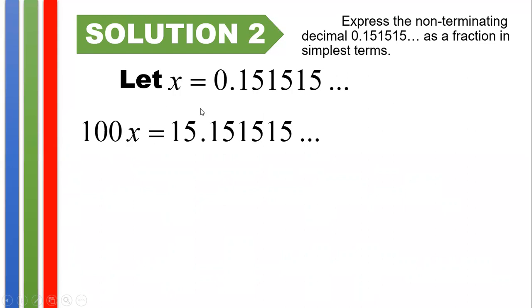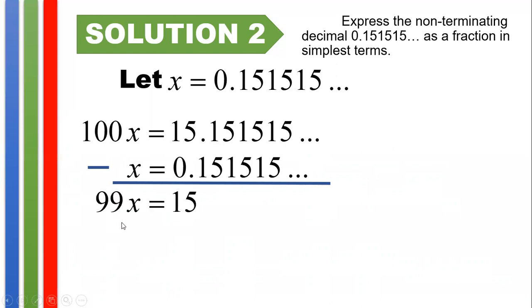0.151515... times 100 will give us 15.151515... And copying this original expression here. And we could see that we could actually make the decimal parts equal to zero by subtraction. And subtracting both sides of the equation, 100x minus x gives 99x equals, if you subtract 15.1515... by 0.1515... so all the decimal parts here will become zero. So you have 15.0 or simply 15. And since our goal is to solve for the value of x, we divide both sides with 99. Hence, x equals 15/99, and expressing this in simplest terms, we have x equals 5/33.